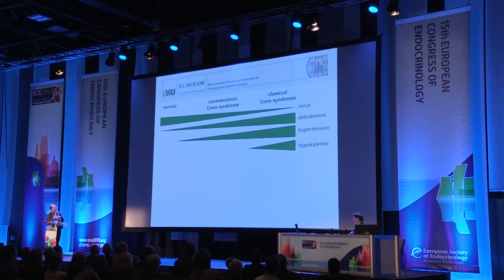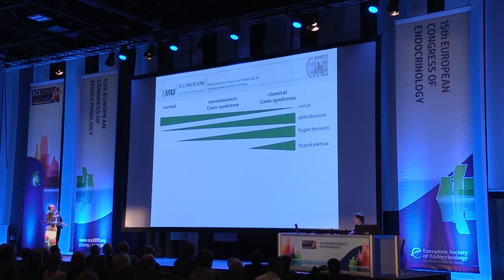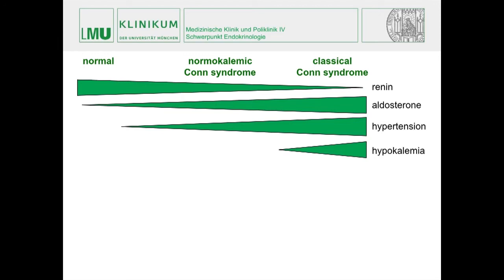Autonomy is not a yes or no thing, but a continuum from normal aldosterone towards higher aldosterone levels, which are followed by lower renin levels through negative feedback in the kidney. As soon as aldosterone kicks in, you have sodium and fluid retention, hypertension, and only at a later time point, when sodium is exchanged for potassium, you have hypokalemia. There is also a normokalemic variant not easily distinguishable from essential hypertension on clinical grounds.